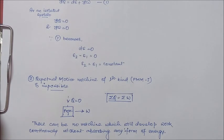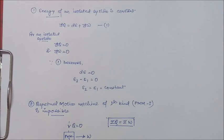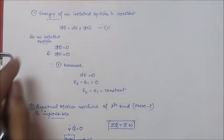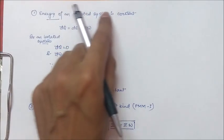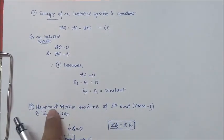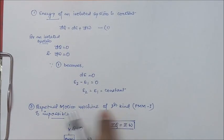So, from the first law of thermodynamics itself we got to know that energy of an isolated system is constant and perpetual motion machine of first kind is impossible.